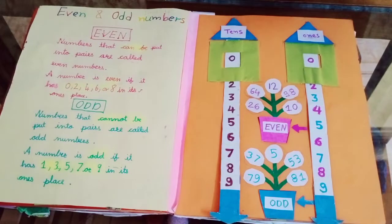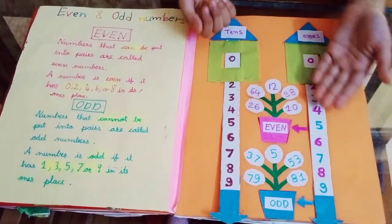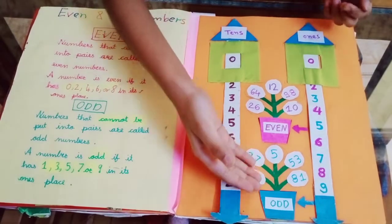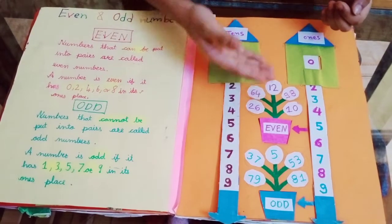This is my even and odd numbers project. This is ones place rocket and this is tens place rocket. This is odd numbers bucket and this is even numbers bucket.